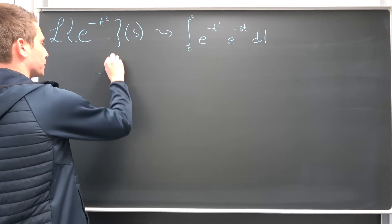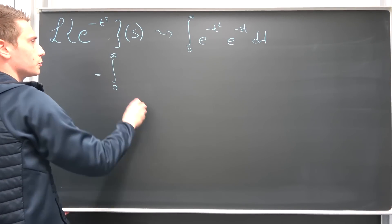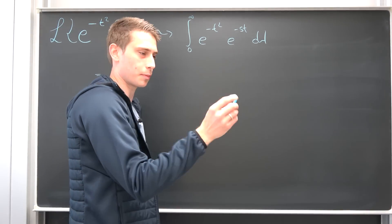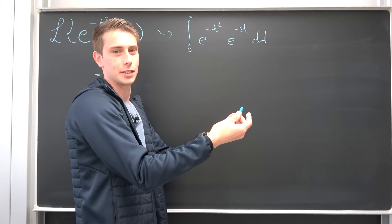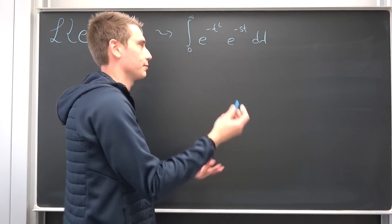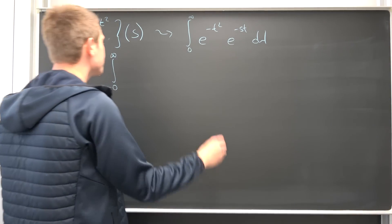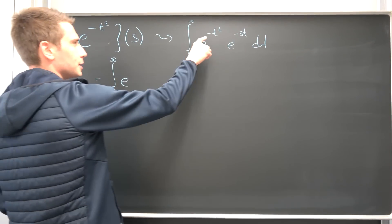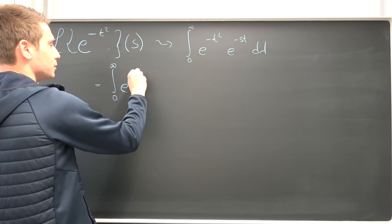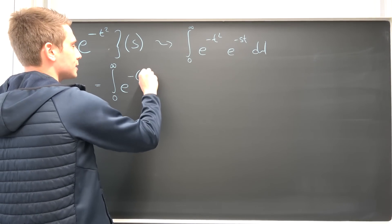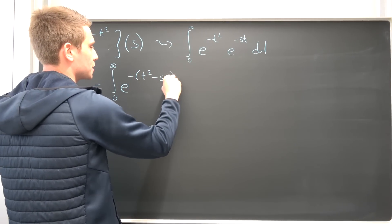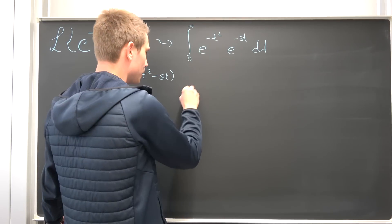So we are going to get an integral from zero to infinity. I'm terribly sorry for the blue shark, but I have to get rid of this. I'm having this in my shark box for quite some time now. So that's something really fancy right here. We are going to get, let's factor out the negative sign up here, e to the negative, we are going to get t squared minus s times t, integrated with respect to t.